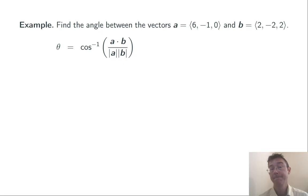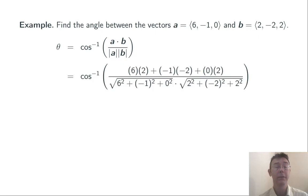Here we're just plugging into our formula. Here's the formula. I take out A and replace it with its components, ⟨6, -1, 0⟩. I take out B and replace it with its components, ⟨2, -2, 2⟩. Simplify. Apply the inverse cosines. And I get about 0.844 radians, about 48.4 degrees.